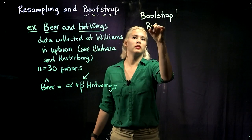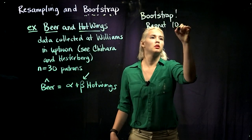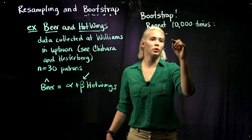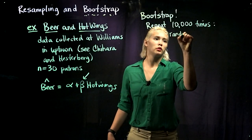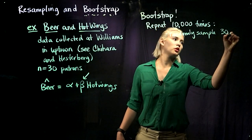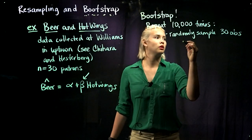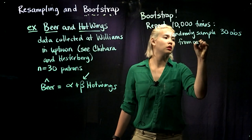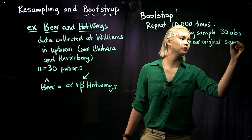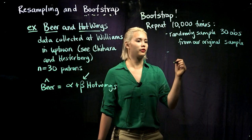So we need to create our bootstrap distribution. What we're going to do is repeat the following two steps 10,000 times: we're going to randomly sample 30 observations from our original dataset and then we're going to do a regression using those 30 observations.